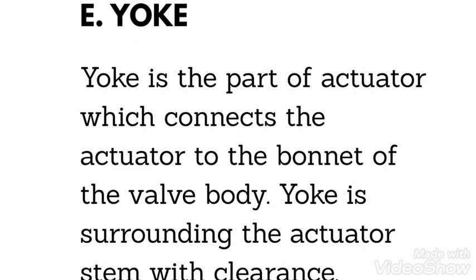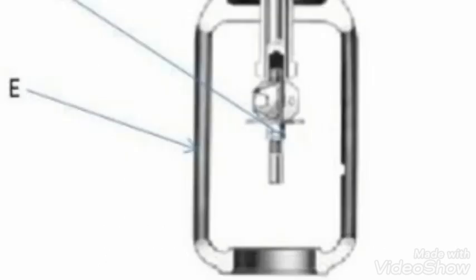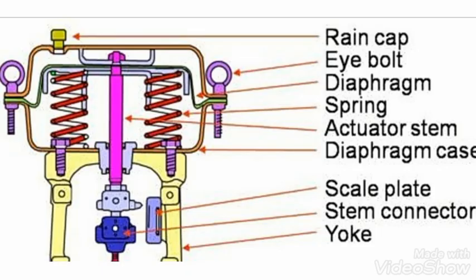The next part is the yoke. The yoke is the part of the actuator which connects the actuator to the bonnet of the valve body. The yoke surrounds the actuator stem with clearance. As you can see, part E is the yoke, and through this part we connect it with the body of the valve.